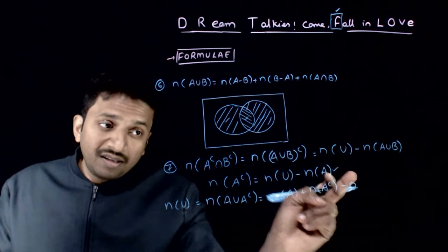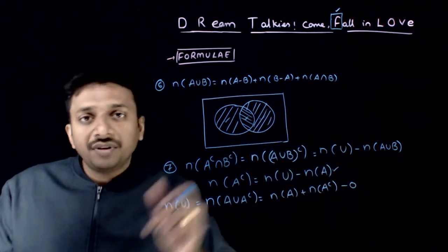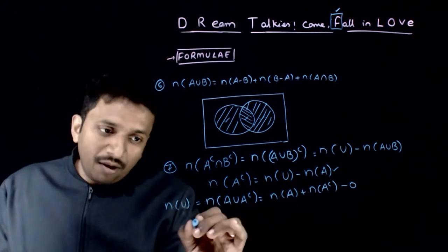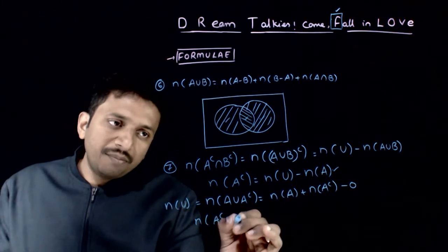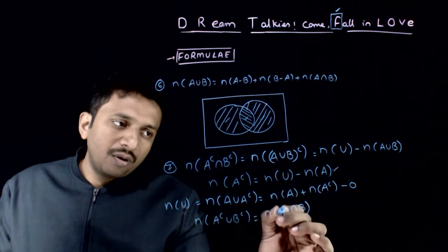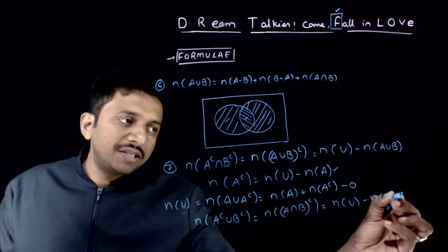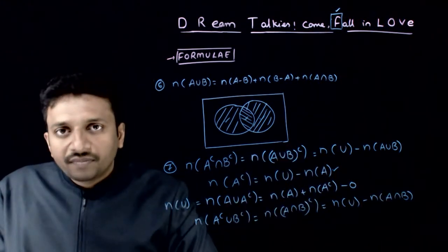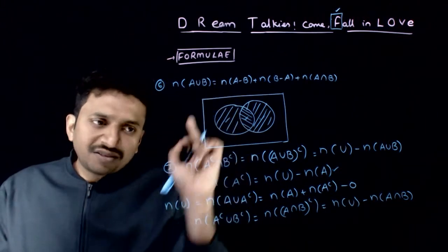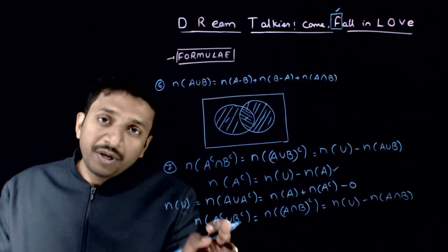Using this, N of A union B whole complement equals N of U minus N of A union B. Similarly, N of A complement union B complement is N of A intersection B whole complement, equal to N of U minus N of A intersection B. These are the next set of formulas: N of A union B, N of A complement intersection B complement, and N of A complement union B complement.